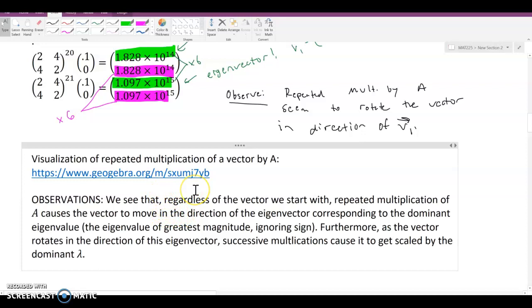So we see that regardless of the vector we start with, repeated multiplication by A causes the vector to move in the direction of the eigenvector corresponding to the dominant eigenvalue, which is the eigenvalue of greatest magnitude. So even if it was negative six and positive two, negative six would be considered a dominant eigenvalue, because you ignore the sign on it. And you'll see why a little bit later in our next lesson.